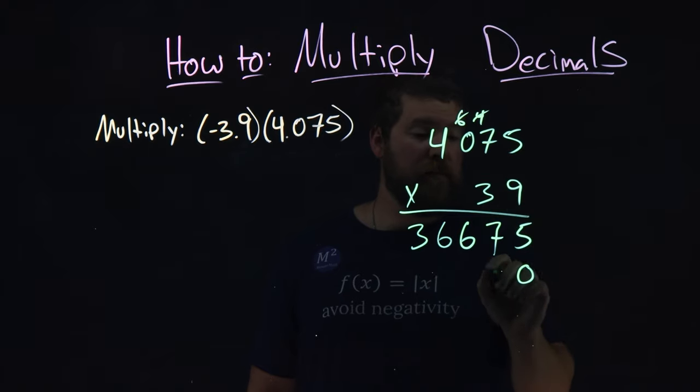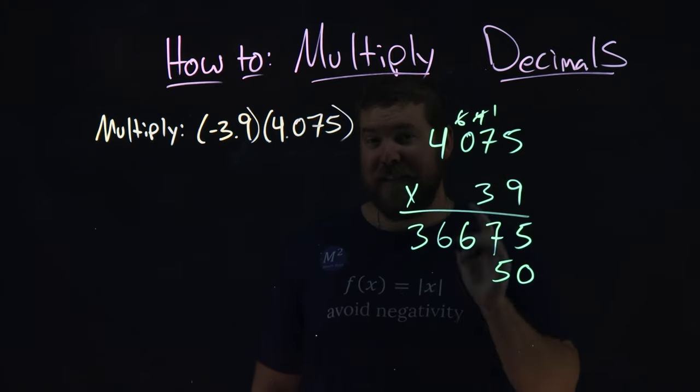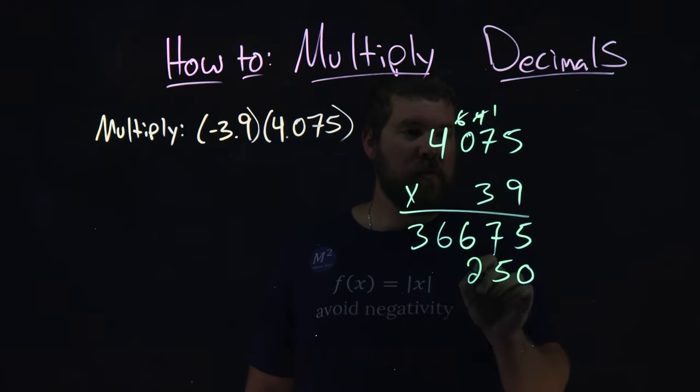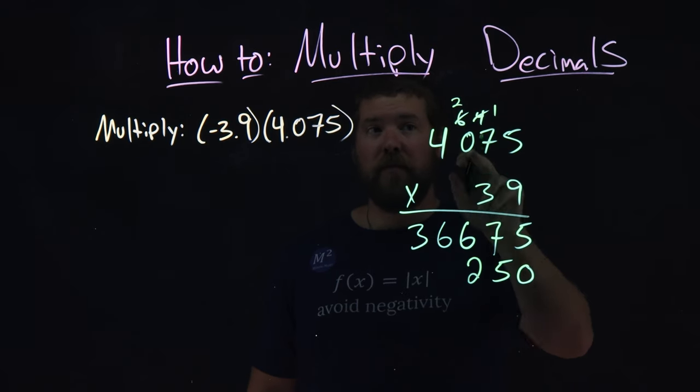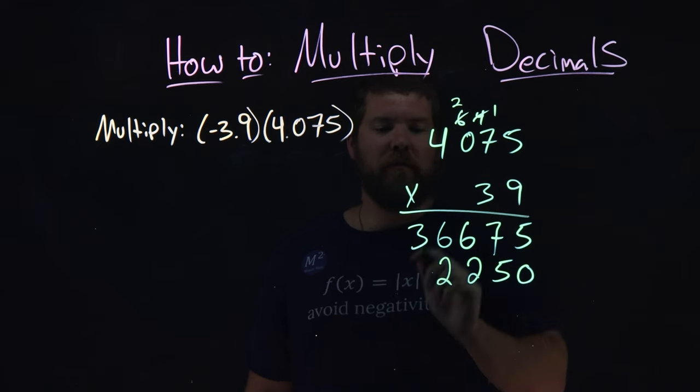3 times 5 is 15. Carry the 1. 3 times 7 is 21, plus 1 is 22. So we put down 2, we carry the 2. 3 times 0 is 0, plus 2 is 2. And 3 times 4 is 12.